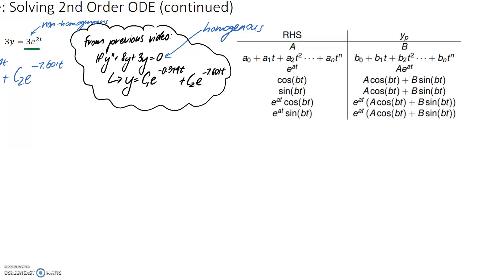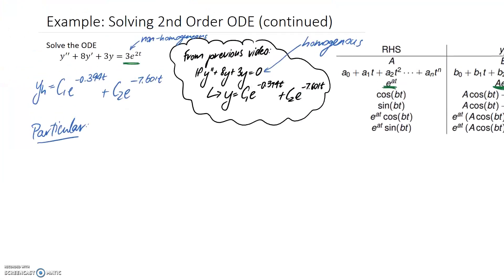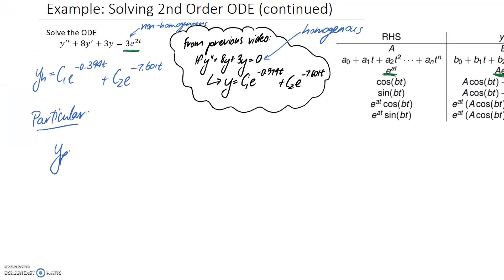If we look down here, which is telling us forms of the right hand side, what we can see is that this one kind of looks similar. We've got e to the at, very similar to this. So what that means is we're going to assume yp, our particular solution, looks like this one here. So Ae to the at, and the little a here corresponds to what's on the right hand side of the equation. So in our case, it's going to correspond to the 2. So let's have a guess at this being our solution. So yp equals Ae to the 2t.